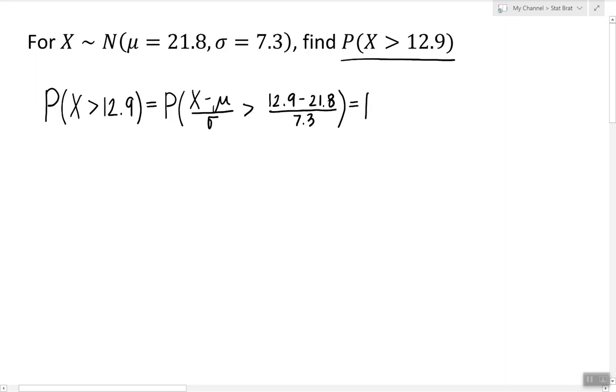And in the second step we're going to rewrite x minus mu over sigma with z and we're going to compute the expression on the right side of the inequality which is equal to negative 1.22.